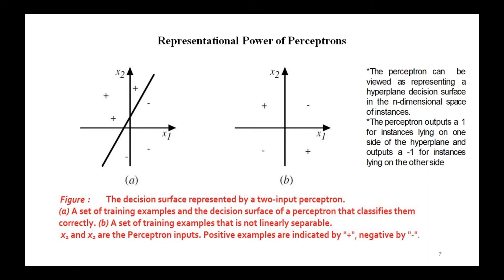This figure shows the decision surface represented by a two-input perceptron. In the first case, a set of training examples and the decision surface of a perceptron that classifies them correctly. In the second case, a set of training examples that is not linearly separable. x1 and x2 are perceptron inputs; positive examples are indicated by plus and negative examples by minus.